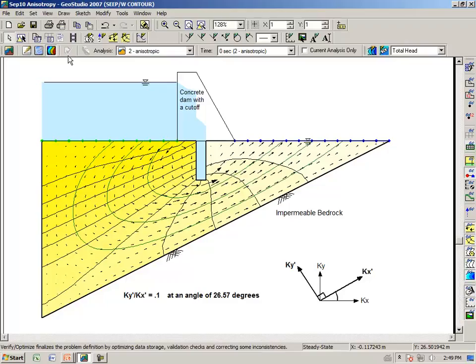So, specifying anisotropy in SeepW is really quite straightforward. However, as we'll see here in just a few moments, making use of anisotropy for field problems, as I've already said, requires some considerable thought and caution.